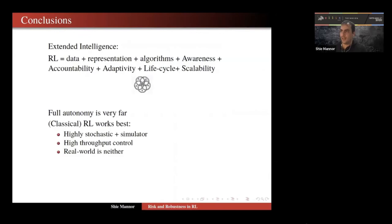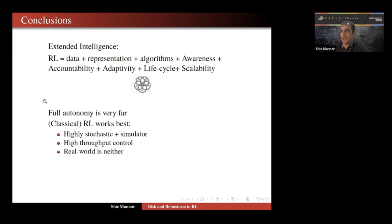Just my personal notes: in the last few years we focused on algorithms — that was great, but that was then. Now we should focus on data, representation, and the five principles: awareness, accountability, adaptivity, life cycle consciousness, and scalability. From working on autonomy problems, we are very far from full autonomy — I don't know how many years. Our work works best when you have a very stochastic environment or a superb simulator and you do a lot of control actions, like in the stock market or computer networks. But the real world is neither — it's not highly stochastic, you don't have a simulator, and you have a lot of interacting agents.